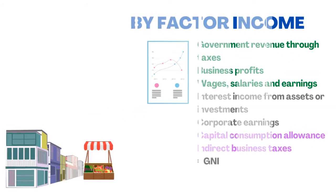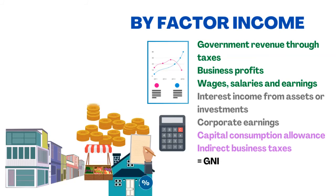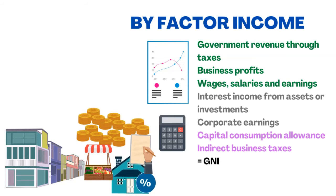An approach to measuring national income is by factor income. It adds government revenue through taxes, business profits, wages, salaries, and earnings, interest income from assets or investments, corporate earnings, capital consumption allowance, and indirect business taxes.